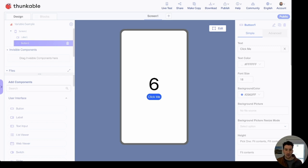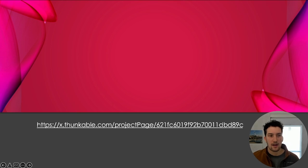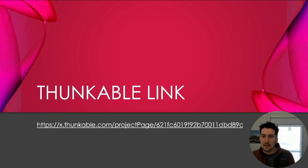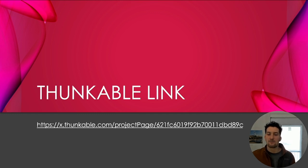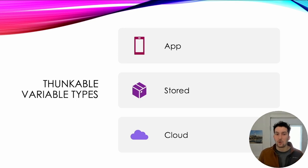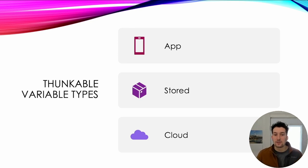I'm going to jump back to the presentation. There's the Thunkable link for variables. The next thing I want to talk about, going a little deeper, are the types of variables you can have in Thunkable. In a previous presentation you learned about variables — they're a place where an app can store data to be used later. One thing we didn't touch on is the types of variables Thunkable uses. There are three types: app variables, stored variables, and cloud variables.